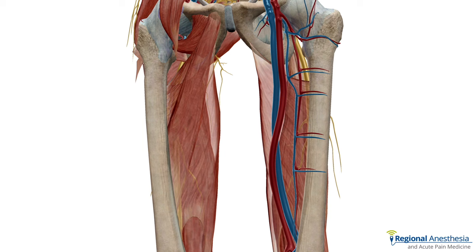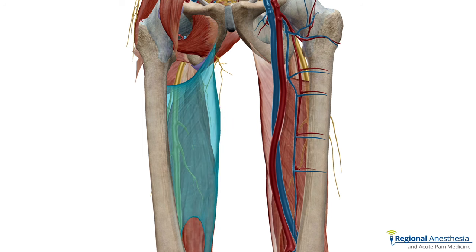If we look deep to the quadriceps muscles in the thigh, we'll first see the adductor longus, then deep to that adductor brevis, and then the aptly named adductor magnus. You can see the chunky sciatic nerve hiding deep to this muscle on top of the long head of the biceps femoris.